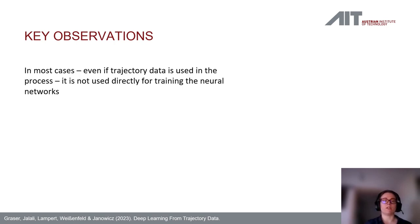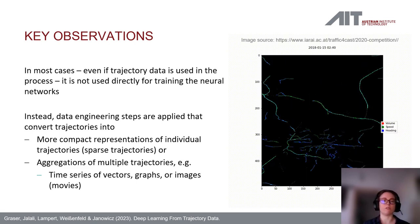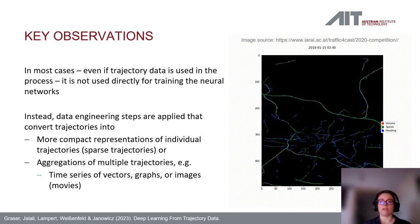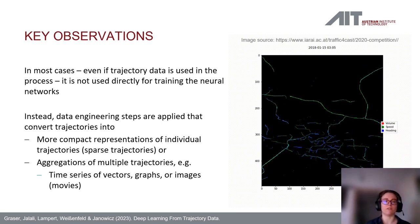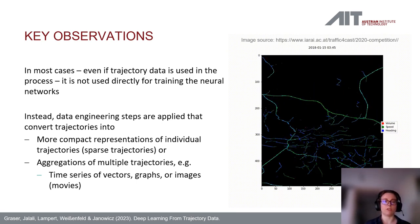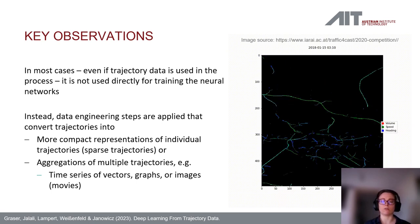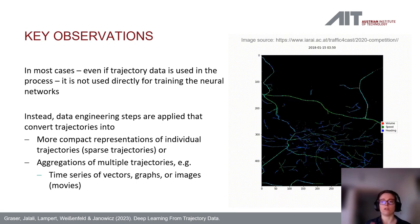The key takeaway message is that even when trajectory data is used in the process, it is very rarely used in its raw form to directly train the neural network. Instead, the trajectory data is put through a series of data engineering steps. The two main paths are either creating more compact representations of individual trajectories or creating aggregations of multiple trajectories.